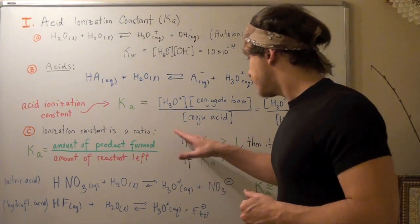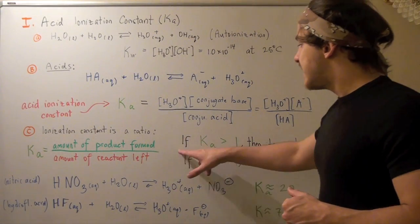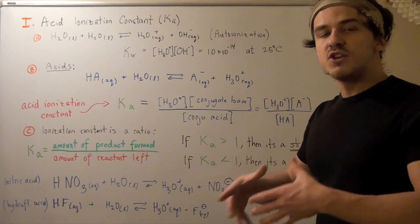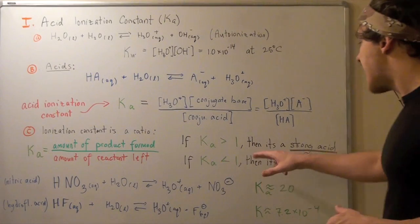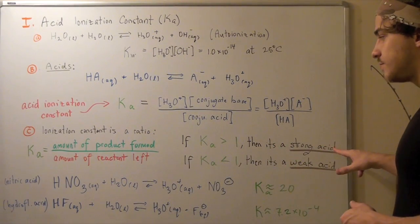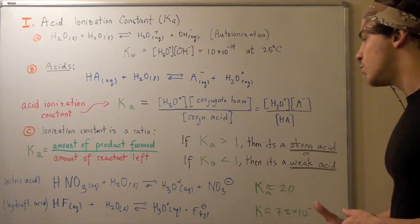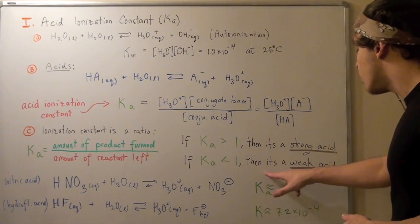We can deduce that if the Ka is greater than 1, then it's a strong acid. And if the Ka is less than 1, that means it's a weak acid.